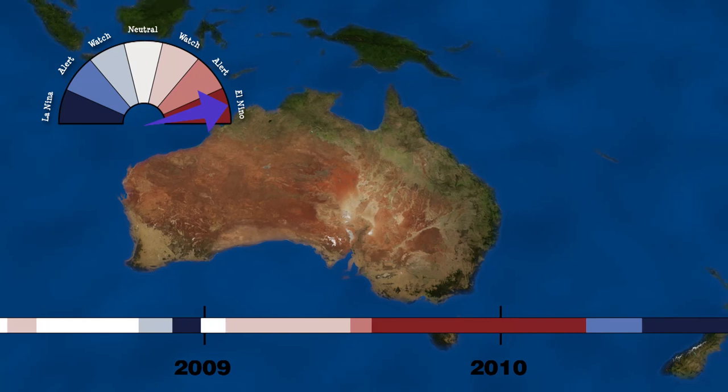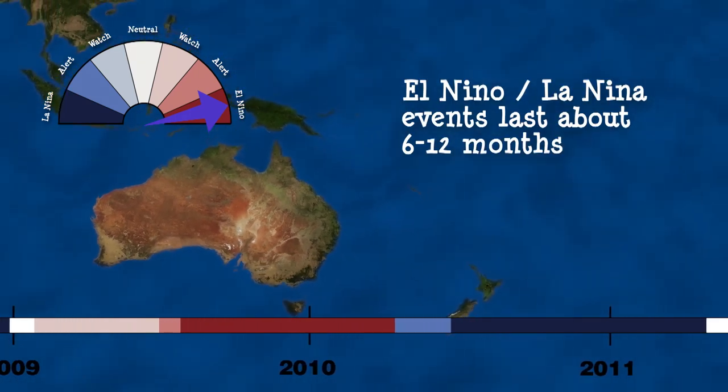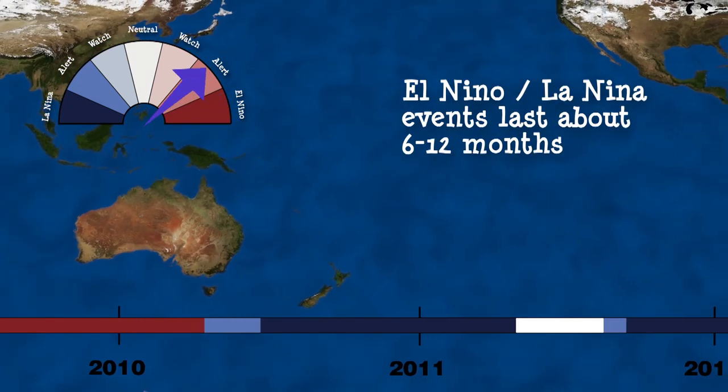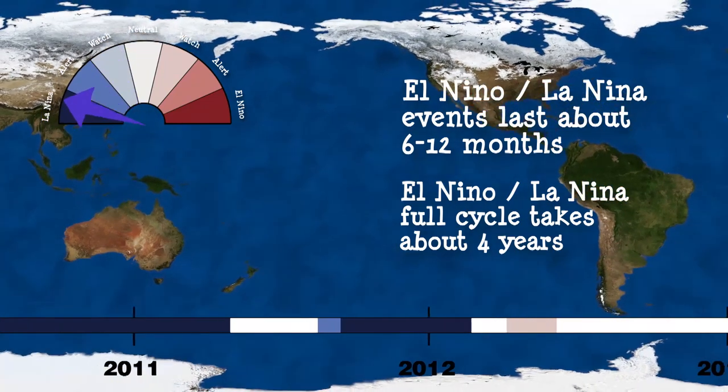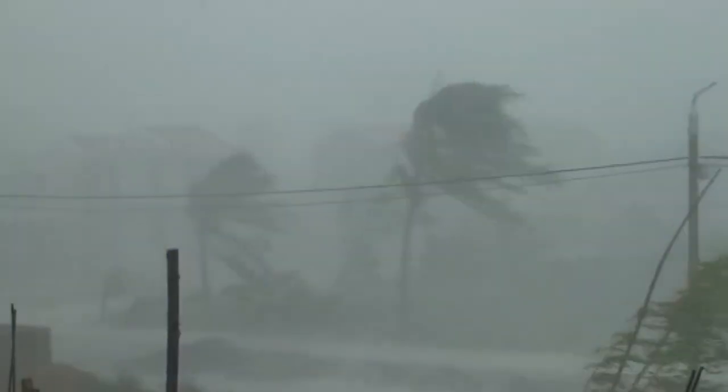Each El Niño and La Niña event lasts about six to twelve months. It takes, on average, four years to cycle from El Niño to La Niña and back again.